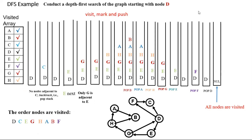Here we have an example. Here is our graph, and we are asked to conduct a depth first search of the graph starting from point D. Here is the visited array — when we visit a node, we mark it. Here is the order nodes are visited, and here is the stack. The general rule is: visit, mark, and push. If we reach a point where the node has no neighbors, then we pop it from the stack and continue. When the stack is empty, we are done, or we can use another condition when all the nodes are visited.